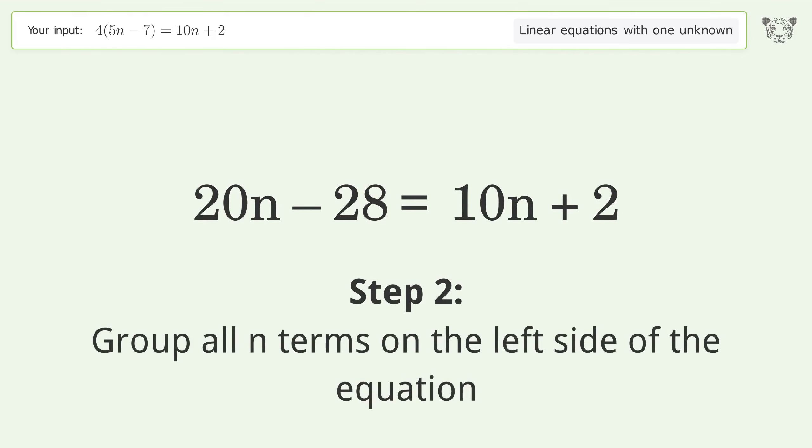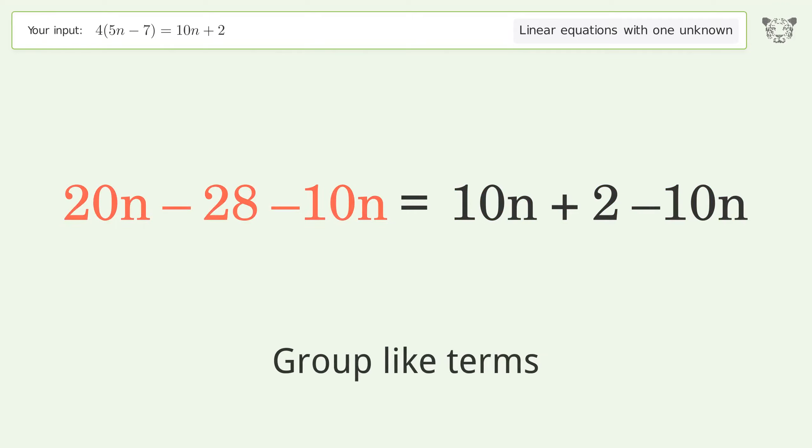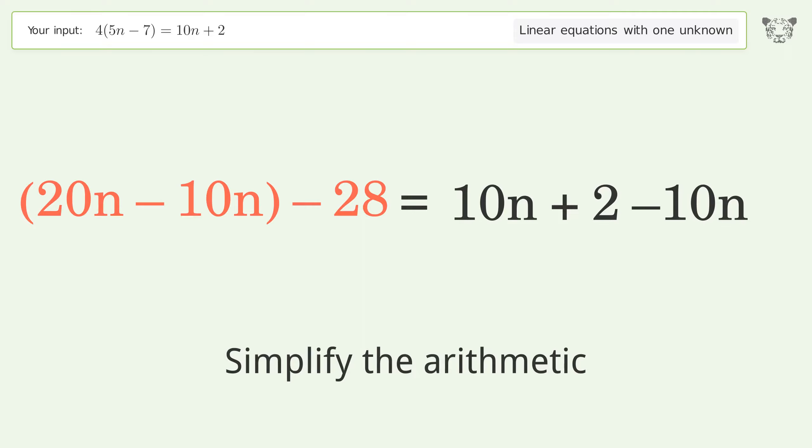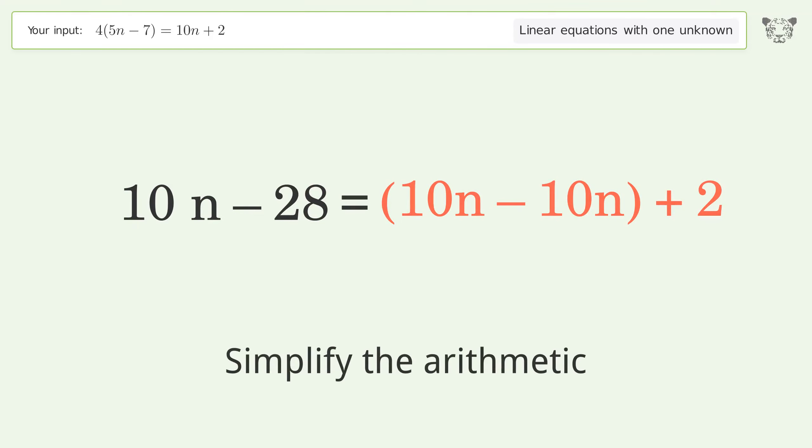Group all n terms on the left side of the equation. Subtract 10n from both sides. Group like terms, simplify the arithmetic. Group like terms, simplify the arithmetic.